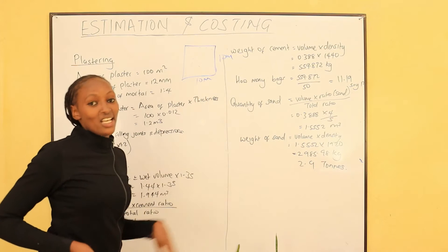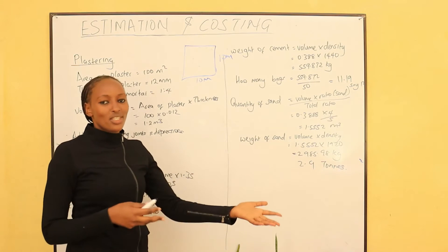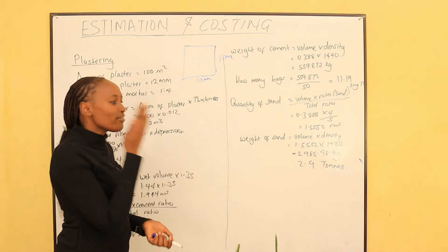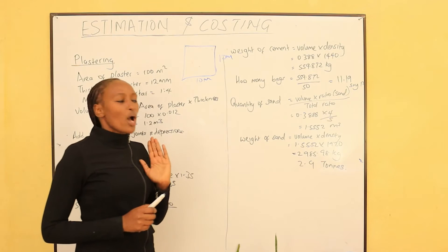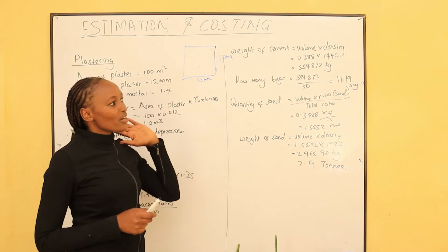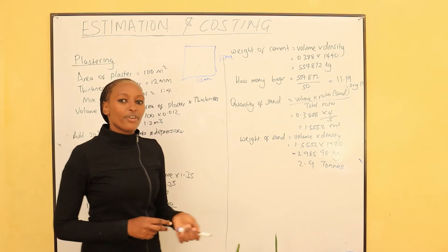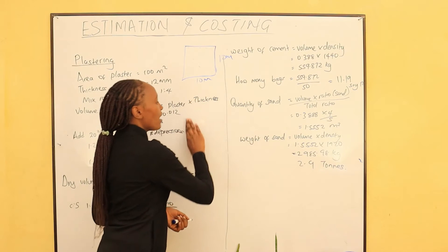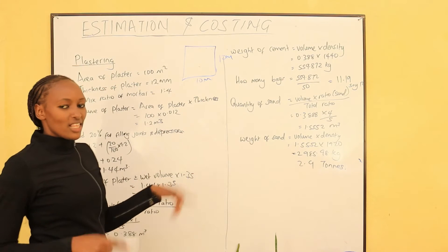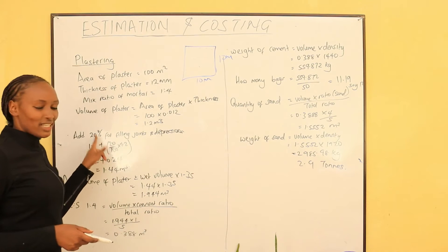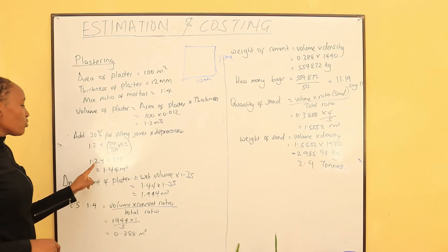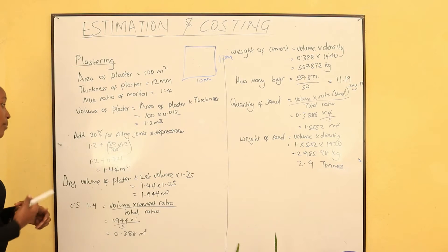When we are doing plastering on a block wall, between the stones there are joints where we do mortar. These joints are sometimes depressed — we have depressions on the wall and we need to bring the wall to the same level so that when we do the plaster the surface is even and smooth. To fill the depressions in the walls — even the stones may have some depressions — we will add a 20% volume on top of the volume we need. So 1.2 meter cubed plus 20% of 1.2 gives us 1.2 plus 0.24. The total volume required is 1.44 meter cubed.